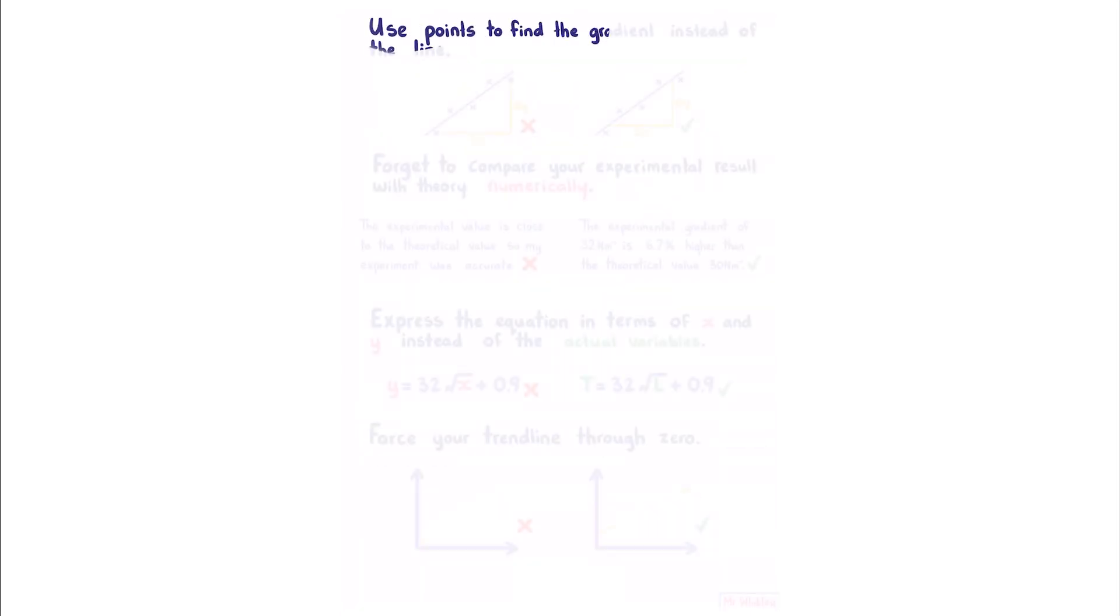You should not use points to find the gradient instead of the line. For example, if you have your points and your line of best fit, and you calculate your change in y and your change in x from the points, this is not okay. Your points should be used to draw your line of best fit, and then you should find the gradient of your line, not the points.